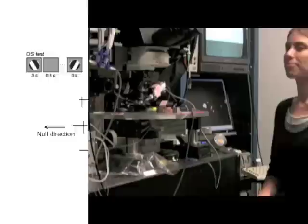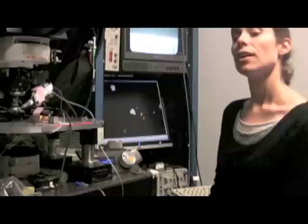This is the rig where I performed my experiment. The retina is isolated and the tissue is put down here under the objective. We use transgenic mouse lines that label direction-selective ganglion cells with GFP.